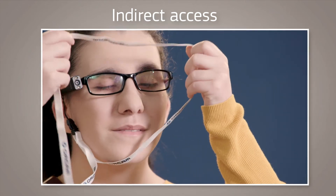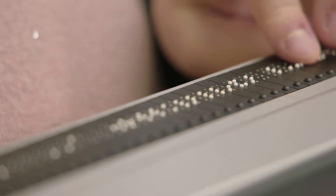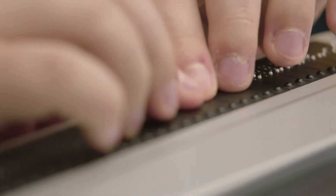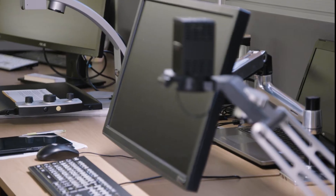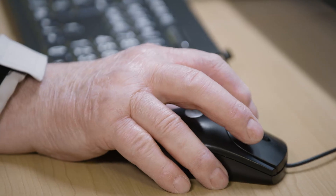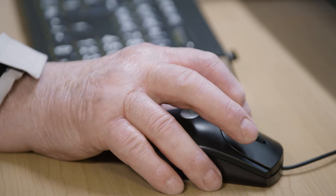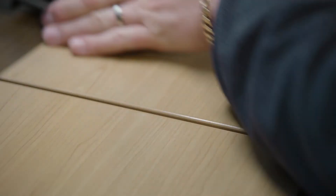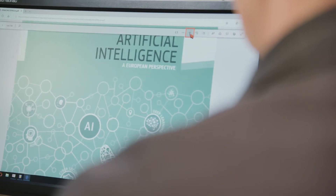Examples of assistive technology are a braille display or keyboard, a screen magnifier, a joystick or a switch used as a mouse, an adapted keyboard, hearing aid or special software.